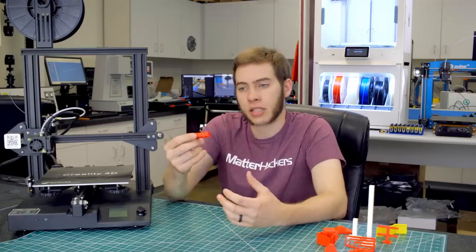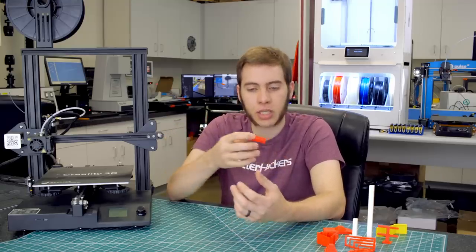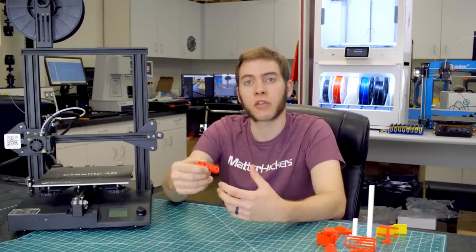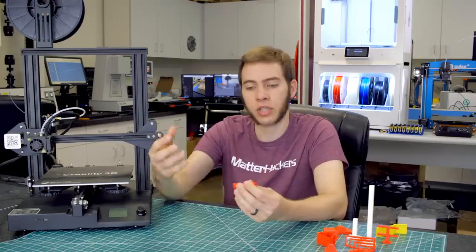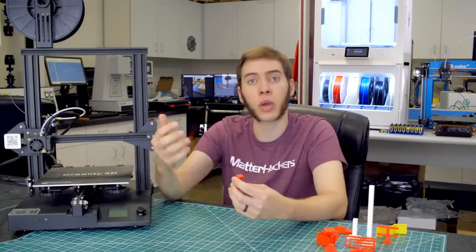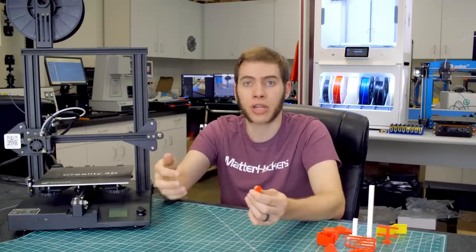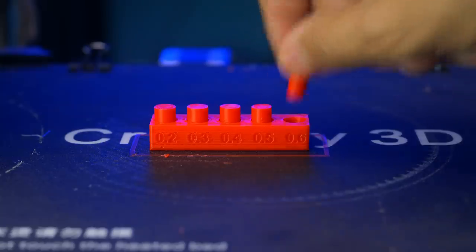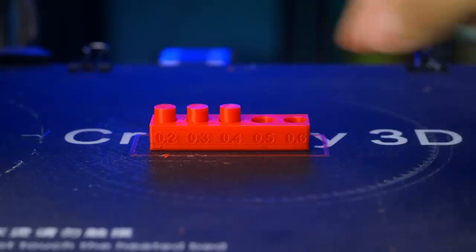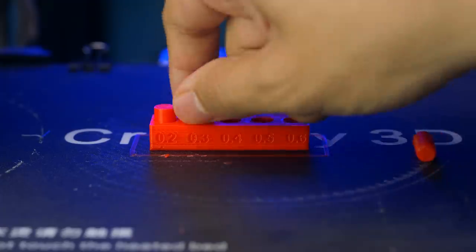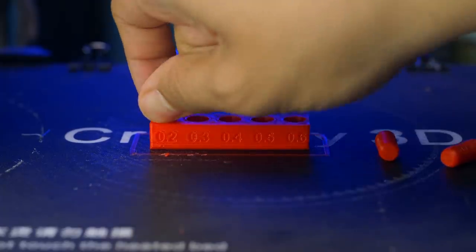This is the negative space test, and much like the dimensional accuracy test, it's really about functional prints. If you're having any multi-part assembly, you need to make sure that your parts fit together the way you intend them to. So if you have a bolt hole on the side of a part, in a space that you can't drill out later, you need to make sure that the hole's large enough to be able to easily slide in that bolt. If it's too small and you can't drill it, you're kind of stuck.